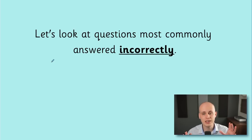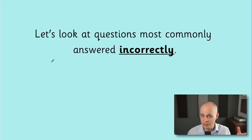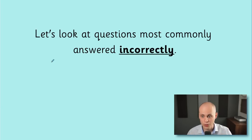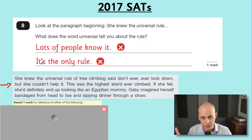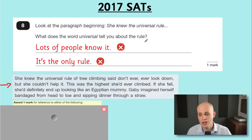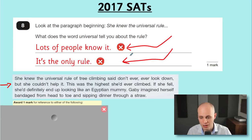What we're going to do now for the last part of this video is look at some questions from past SATs papers that historically have been answered very incorrectly. We've got a lot of data that lets us know children have answered these particular questions incorrectly — I've picked them out for you and put them on the screen. First one from the 2017 paper: I've given you the text here so you can pause the video and have a go.